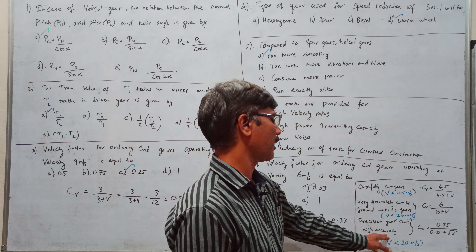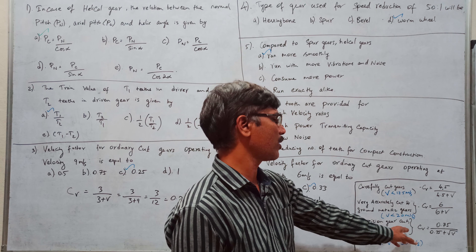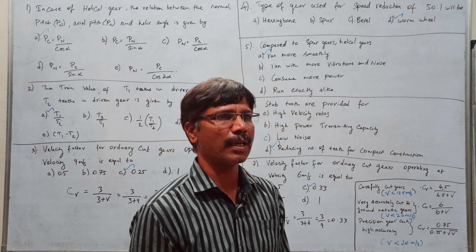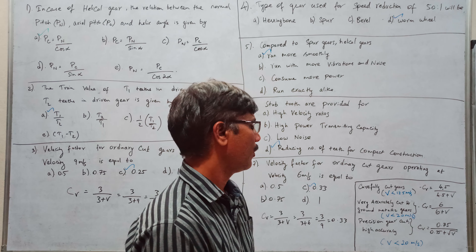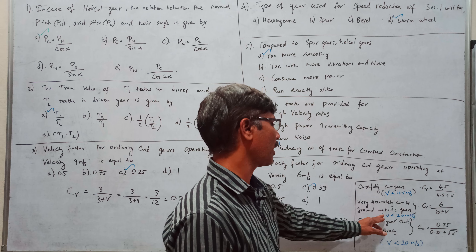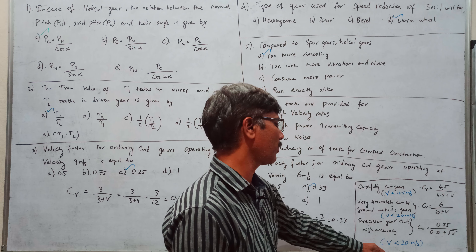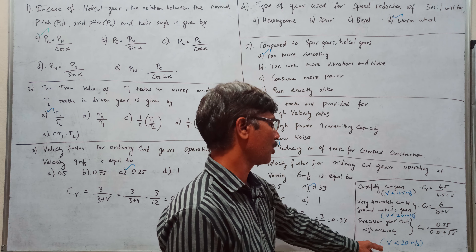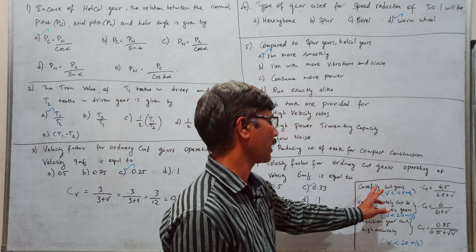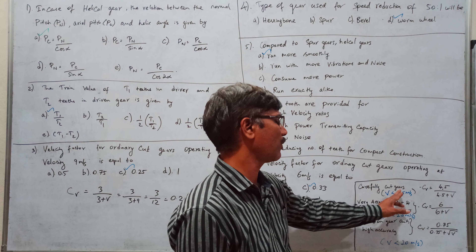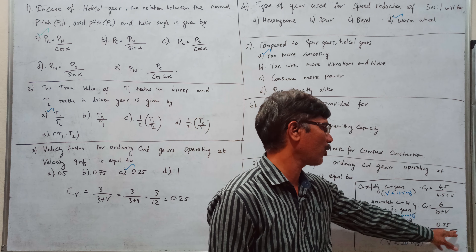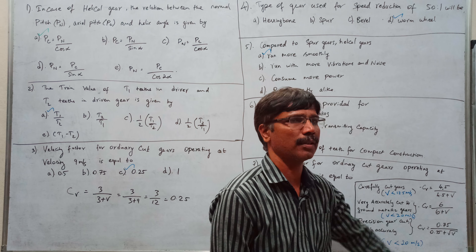Precision gear cut high: 0.75 divided by root of 0.75 plus root V. Very accurate — velocity less than 20 meters per second. Precision gear: velocity less than 20 meters per second; carefully cut: 12.5 meters per second, increment root V.